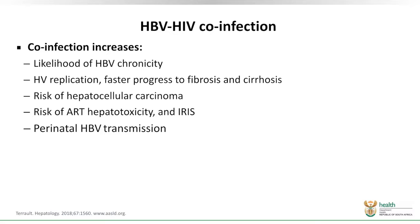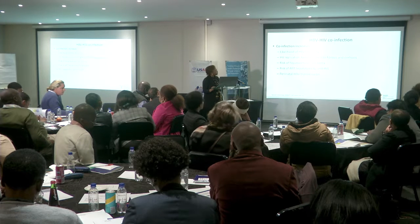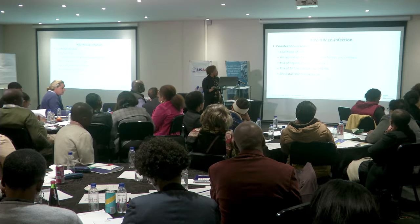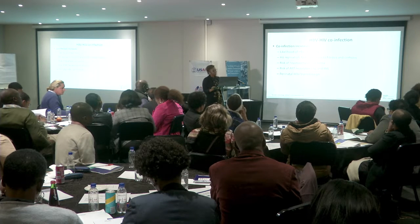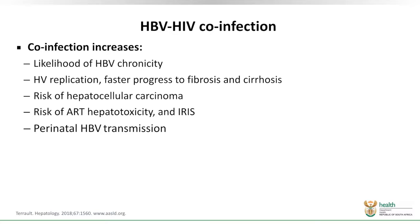In hepatitis B and HIV co-infected patients, co-infection increases the likelihood of a patient with acute hepatitis progressing to the chronic phase. Hepatitis B viral replication is faster, and the patient is more likely to progress to fibrosis and cirrhosis if they are also HIV positive. The hepatocellular carcinoma risk is also increased, as is the risk of ART hepatotoxicity and IRIS, and perinatal hepatitis B viral transmission is also increased.